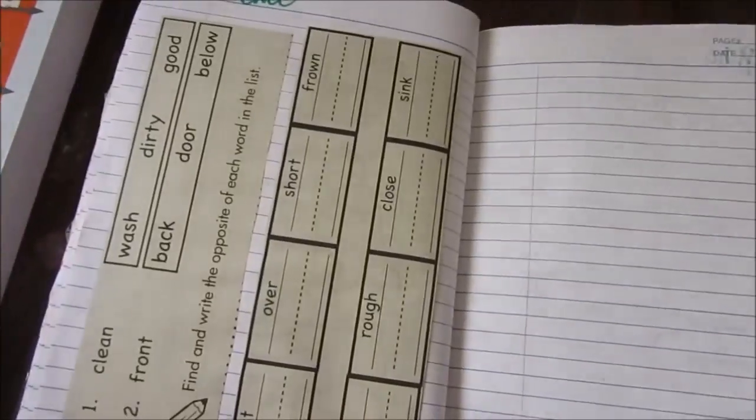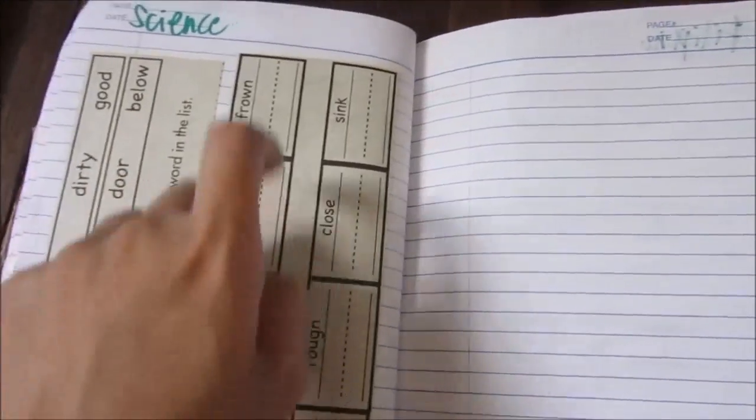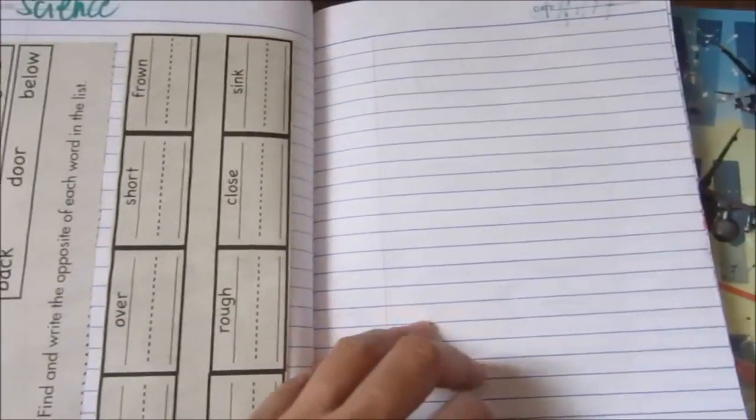And then for this one, these are antonyms. So he will just circle the antonym and then glue the opposite words.